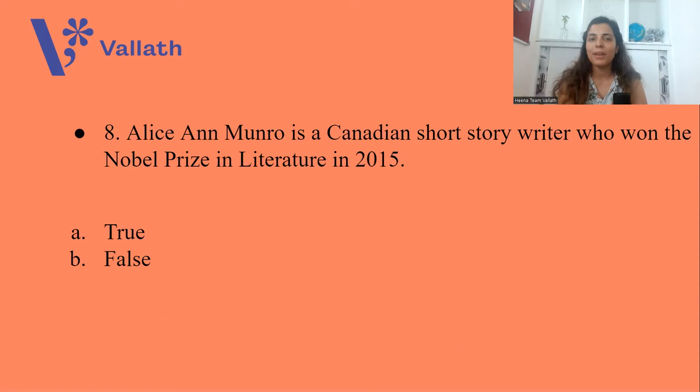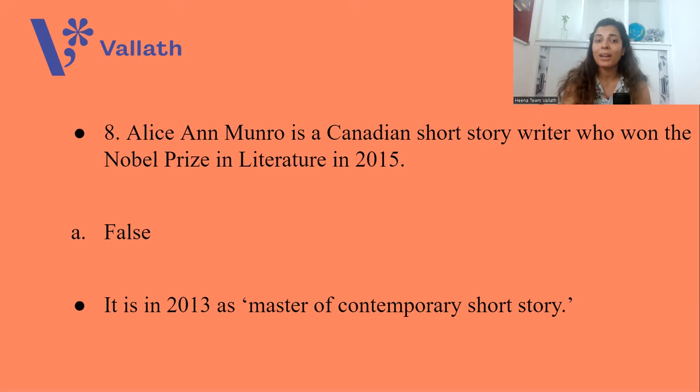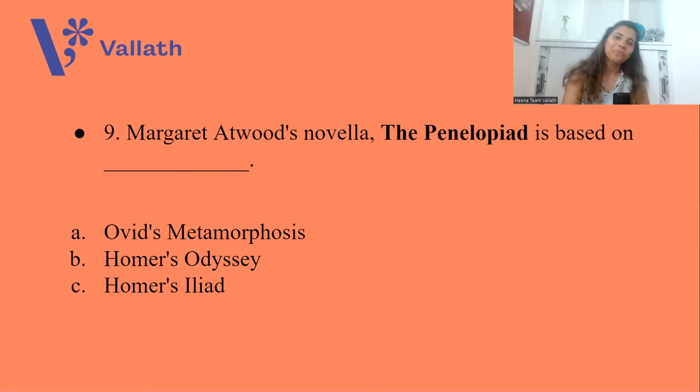Question number eight: Alice Ann Munro is a Canadian short story writer who won the Nobel Prize in Literature in 2015. True or False? The answer is B, False. She won it in the year 2013 as Master of the Contemporary Short Story. Alice Ann Munro, Canadian short story writer.